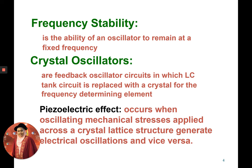An example of a feedback oscillator is what we call a crystal oscillator, which uses an LC tank that is replaced with a crystal as the frequency determining element. For a crystal oscillator it uses an effect called the piezoelectric effect in order to achieve frequency stability.